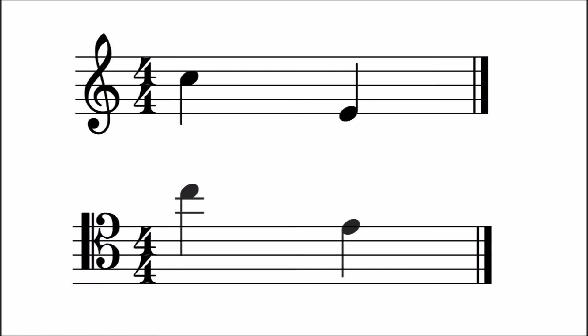The C above middle C in treble clef would be written above the second ledger line above the tenor clef stave. And the E just above middle C in the treble clef would be written on the top line of the tenor clef stave.